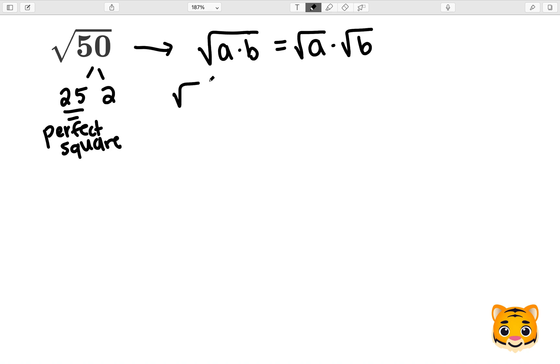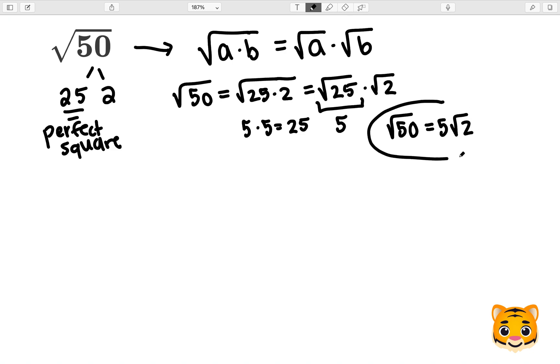So now we can rewrite the square root of 50 as the square root of 25 times 2, which we can then rewrite as the square root of 25 times the square root of 2. Now we can notice that because the square root of 25 is a perfect square, we will get the value 5 here because 5 times 5 gives us 25. Therefore, the square root of 50 can then be written as 5 root 2 or 5 times root 2.